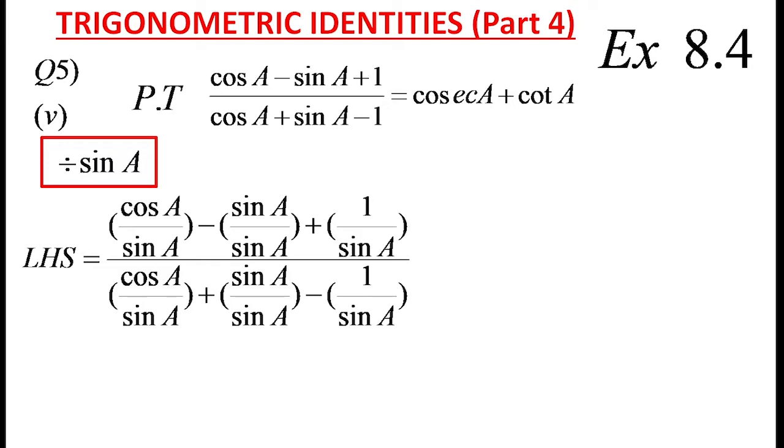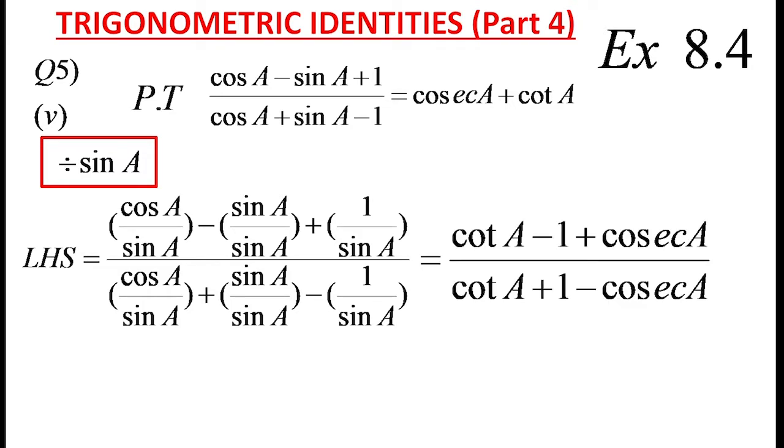Here what we had done, each and every term of the left side we have to divide with sin A. Now what will be the terms? That means it will be cot A minus 1 plus cosec A by cot A plus 1 minus cosec A, because cos A by sin A is cot A and sin A by sin A is 1 and 1 by sin A is cosec A.